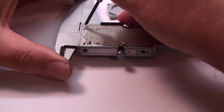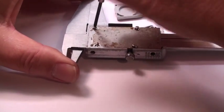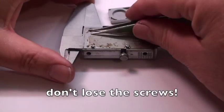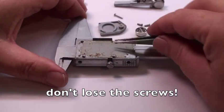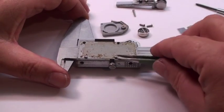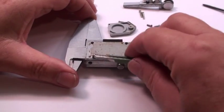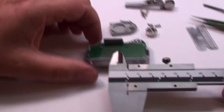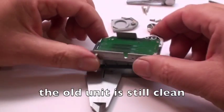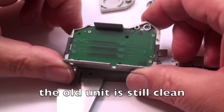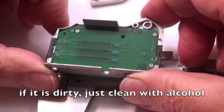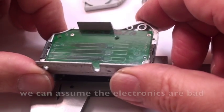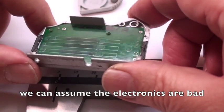Again, the Phillips screwdriver, comes out very easily. Don't lose these screws. I look at the inside here and I don't see any dirt whatsoever. If it were dirty, I would try to clean it off and put it back on to see if that was the problem. But since it looks like there's nothing wrong with it, obviously the electronics have gone bad.